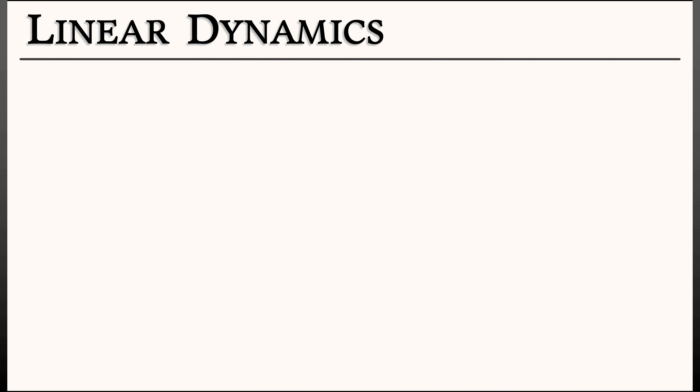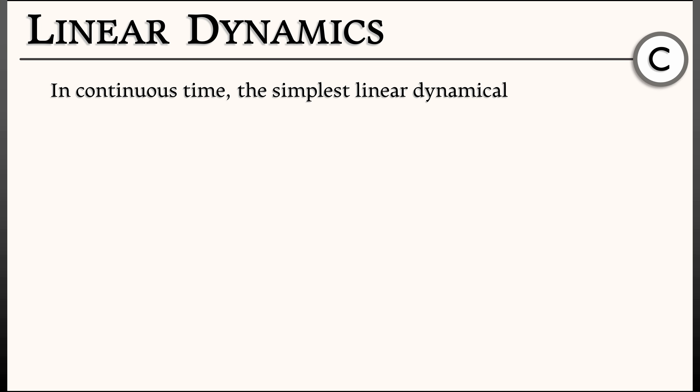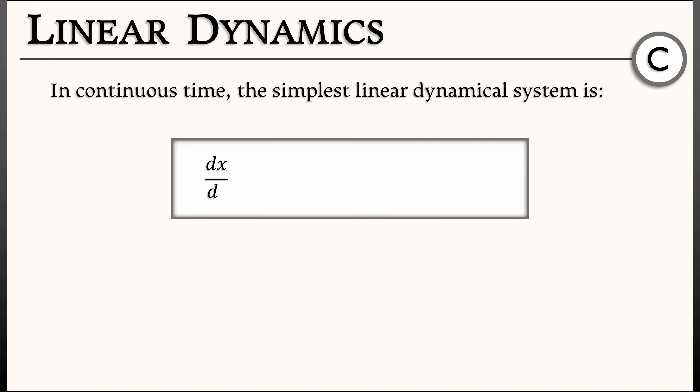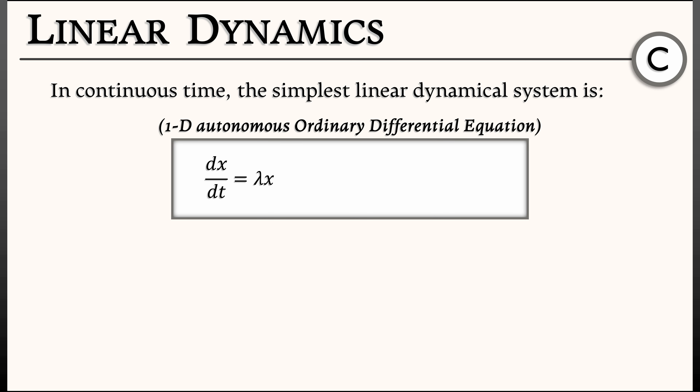Let's do continuous time first. The simplest linear dynamical system in continuous time is given by dx/dt equals lambda x, where lambda is a constant. This is a one-dimensional autonomous ordinary differential equation. It might be helpful to write this in operator notation as dx equals lambda x, where again lambda is a constant.